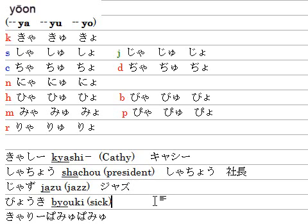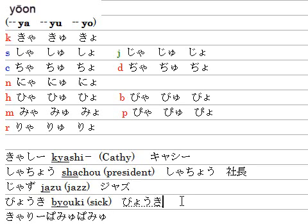The next word is Byouki, which means sick. Type B-Y-O for byo, then U, then K-I for ki — giving Byouki. The byou part has O and U in a row, making it a long vowel sound. And Byouki has a kanji for 'sick' as well.